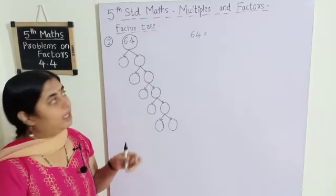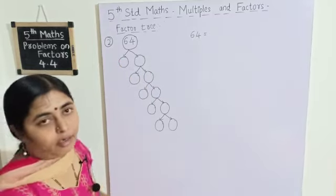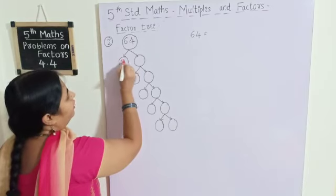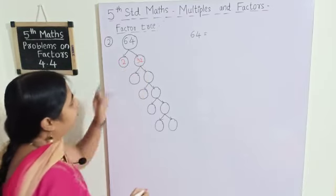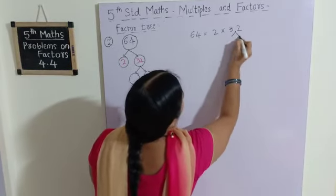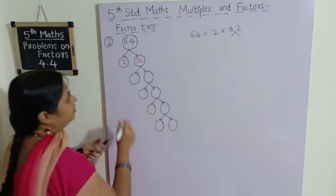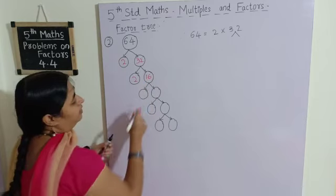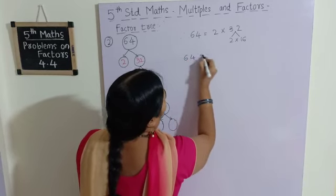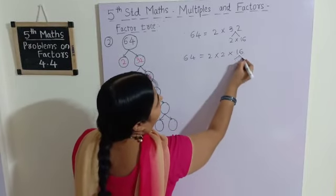Now we will find the factor tree for 64. We can write 64 as 2 into 32. Further, 2 we cannot multiply with any other number than 1, so we leave that. 32 can be written as 2 into 16. Therefore 64 becomes 2 into 2 into 16.